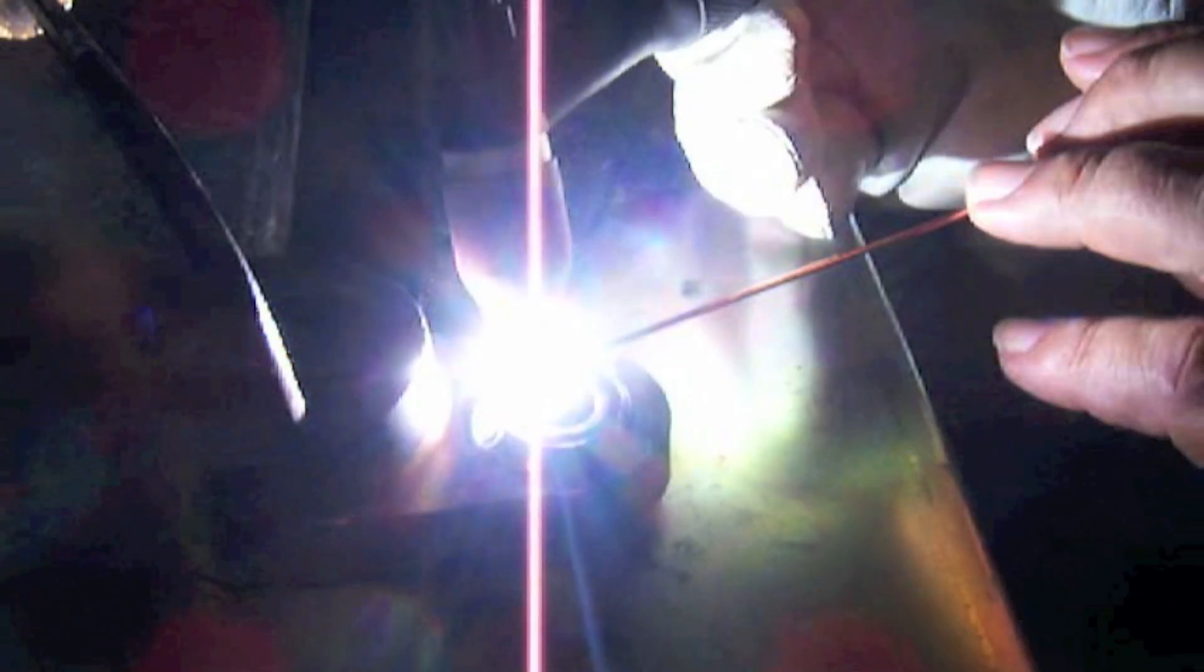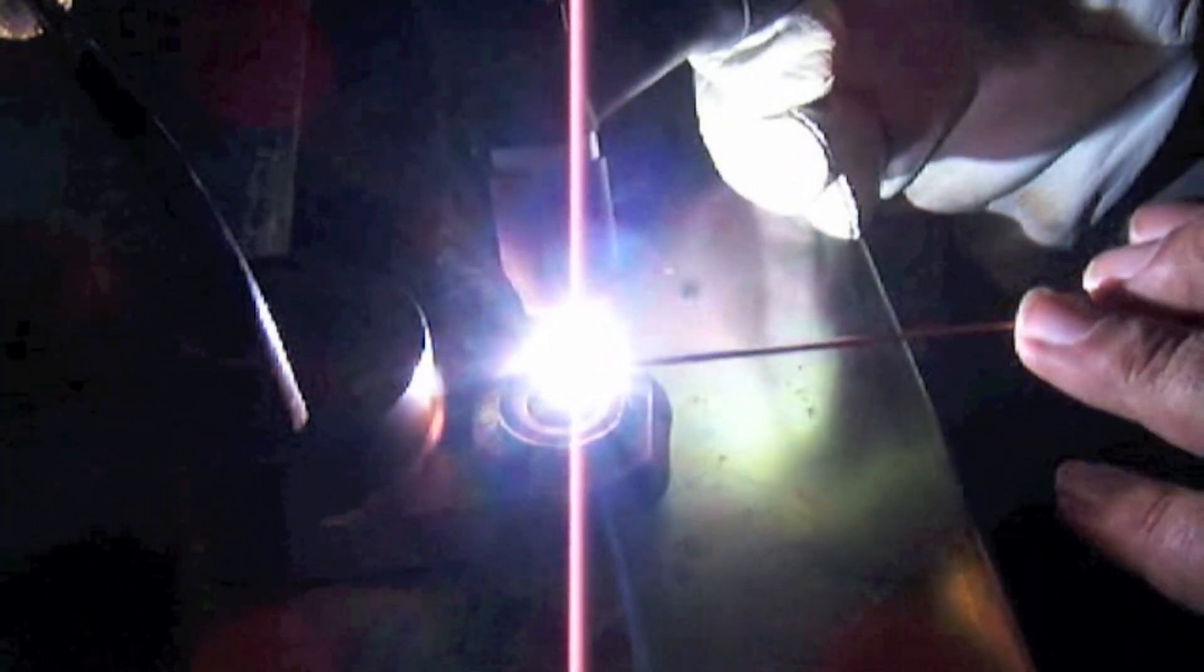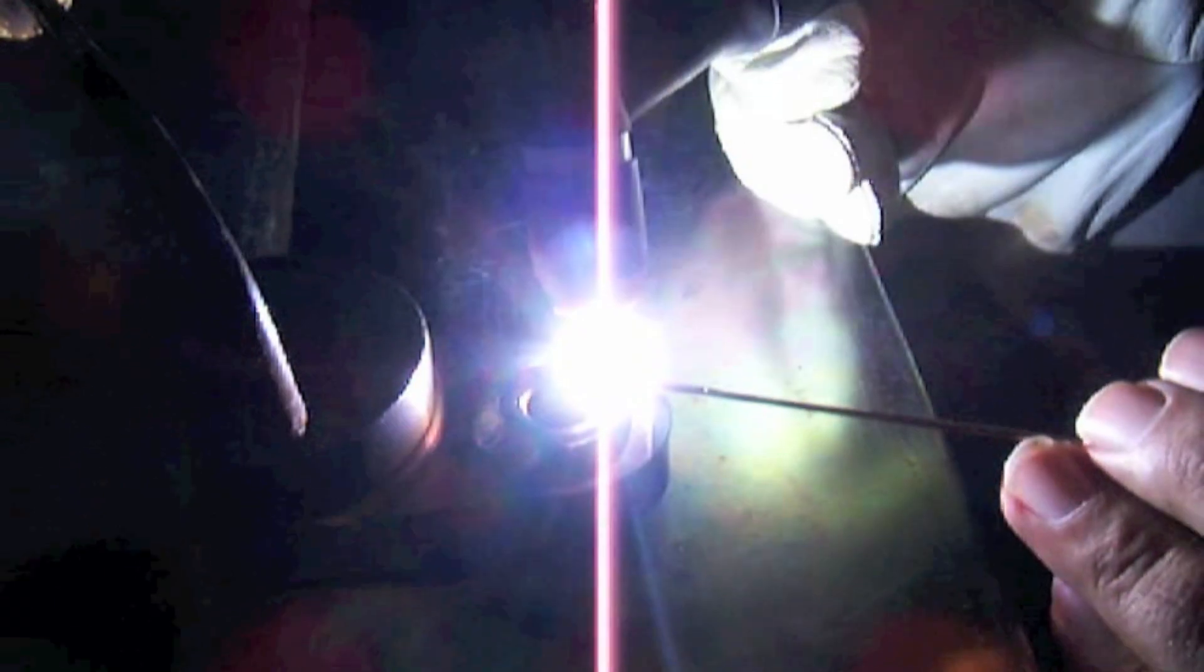Now you can see how much that looks like—I'll go back to the steel here. The weldability, the way the puddle looks on 4140 and 4130, is very similar to plain old steel. What you have to watch out for though is it's a lot more crack sensitive.